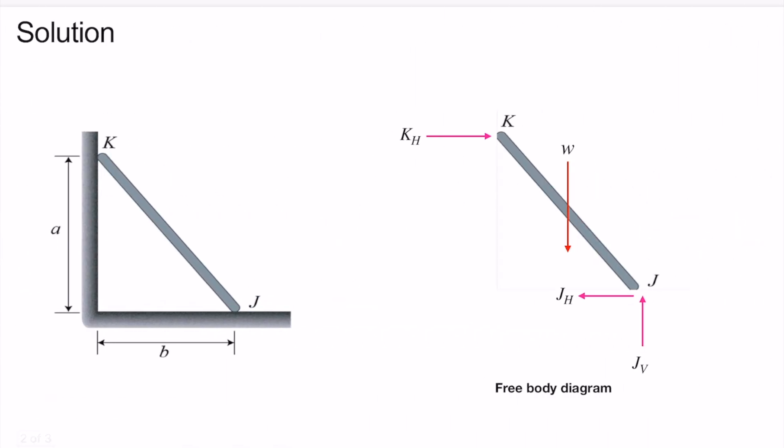The first step is to draw the free body diagram of the rod KJ. The weight of the rod KJ will act at the center as shown in this figure.